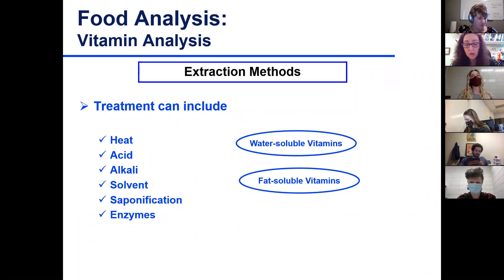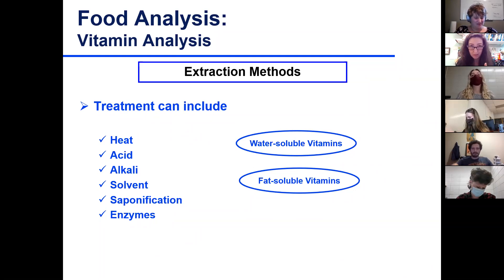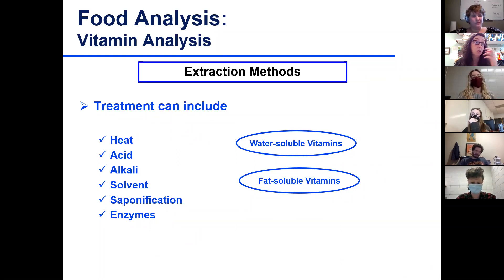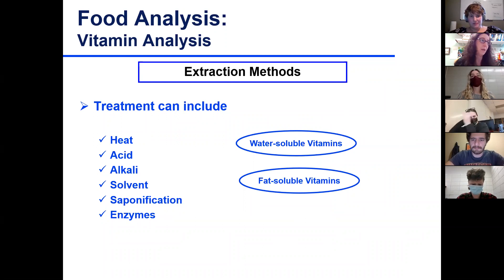Extraction methods depend on the matrix. Fat-soluble vitamins are extracted in organic solvent, but since fat is present too, you saponify the fat to solubilize it and remove it, then extract again with organic solvent to get your vitamins. For water-soluble vitamins, you often autoclave - using heat under acidic conditions - to extract the vitamin from the matrix. Sometimes you need enzymes to release vitamins from their interaction with protein or carbohydrates.